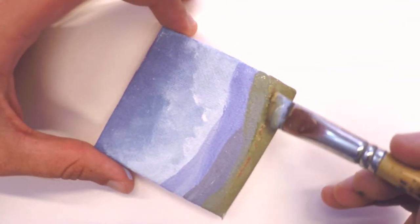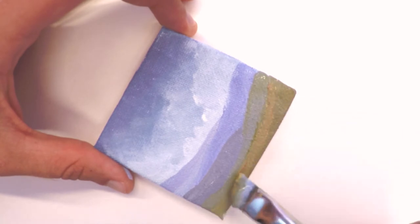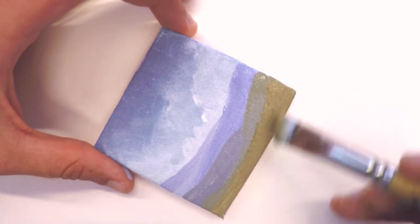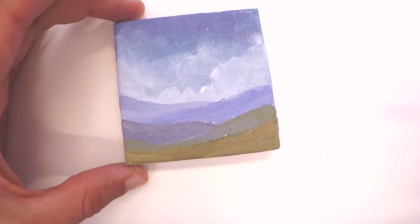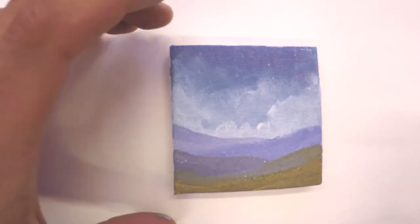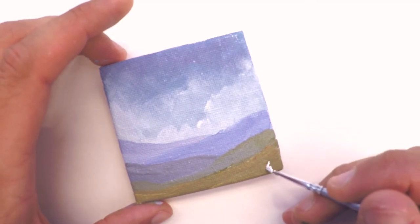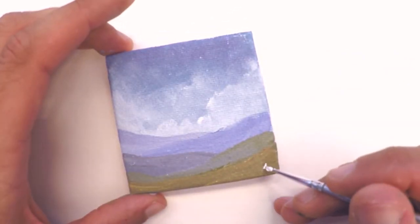Before you know it, you've created this vast landscape that's rolling all the way towards the background. I'm just going to touch up this foreground layer with a bit of yellow here. And then as a final touch, I'm just grabbing a little bit of white to put my signature down at the bottom.